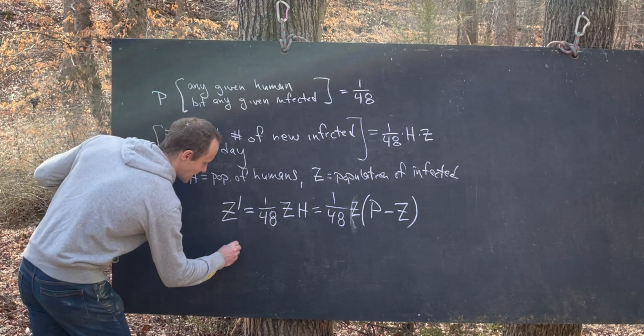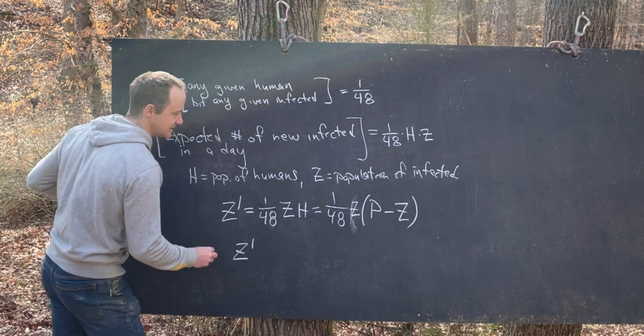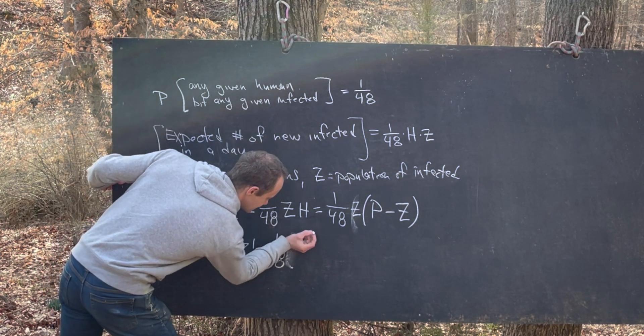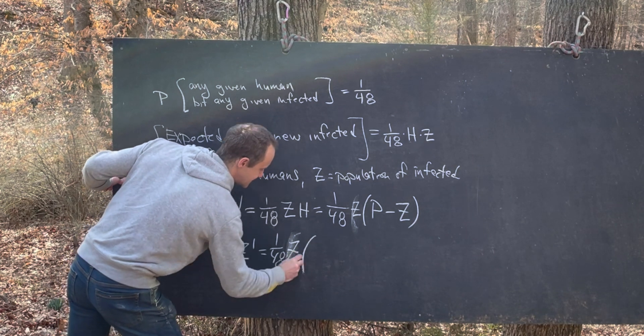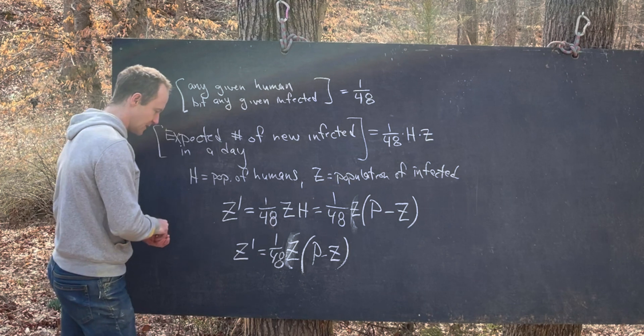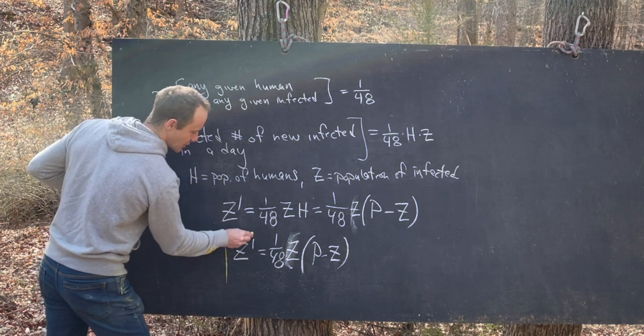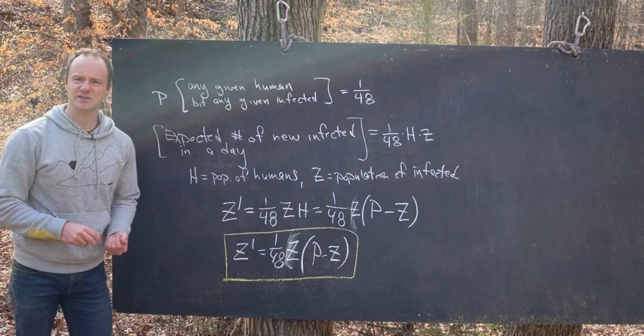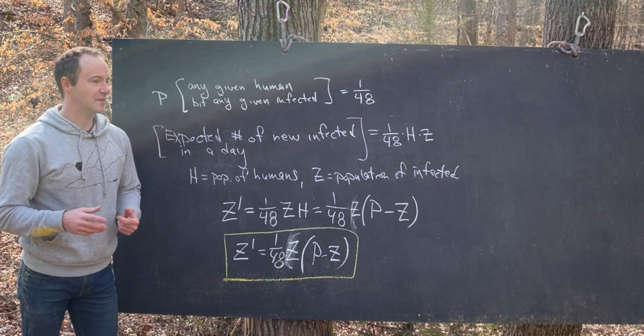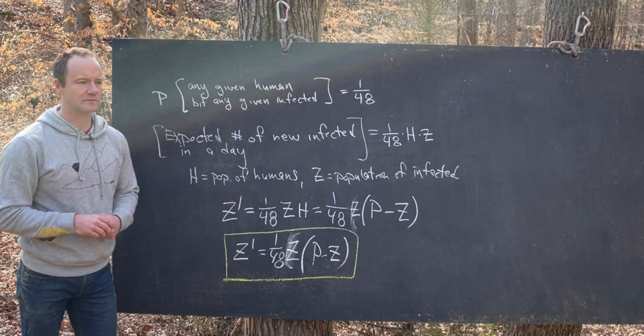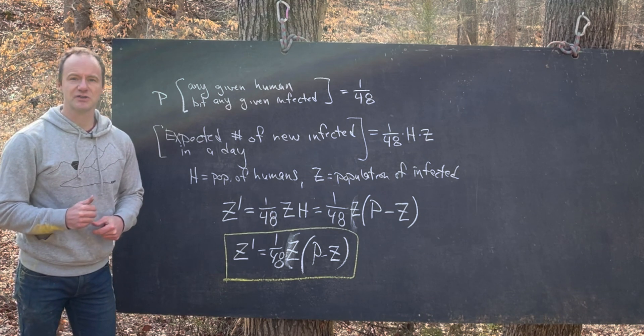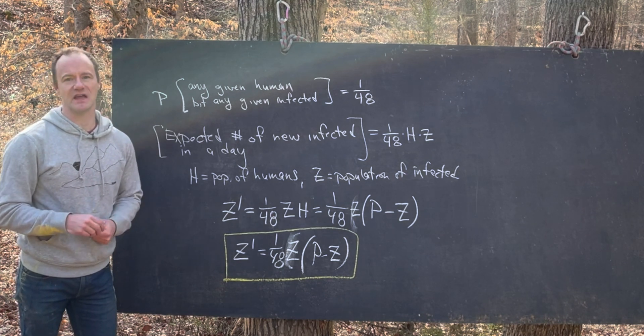So let's see the summary that we have. We have Z prime is equal to 1 over 48 times, like we said before, Z times P minus Z. But I think that's a differential equation we can solve. And if we can solve this differential equation, then we can get our hands around the spread of this infection. Okay. Well, I think my time at this safe spot is running out. So I'll meet you back at the super safe house.